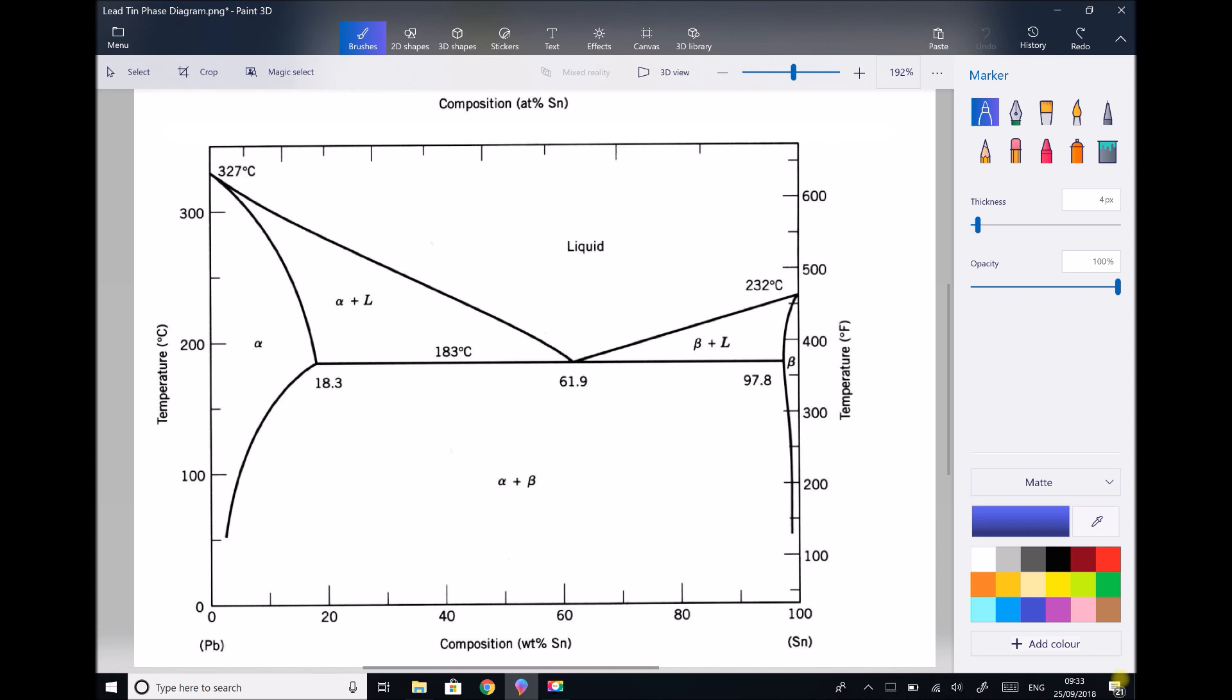Now this particular phase diagram that we're looking at is for a lead-tin alloy. Lead is PB, tin is SN. And lead-tin alloys are used for solder in electronics.